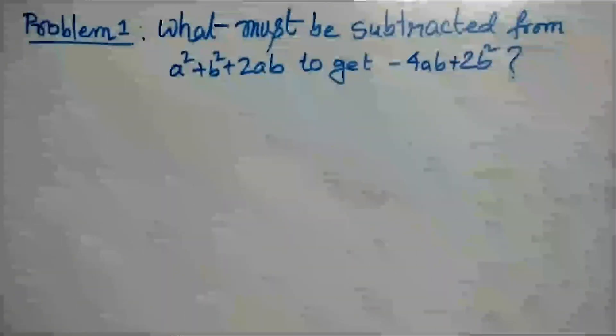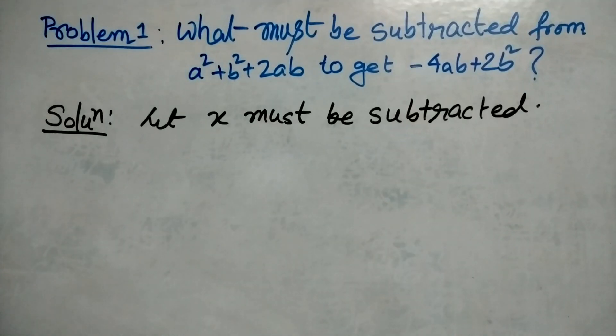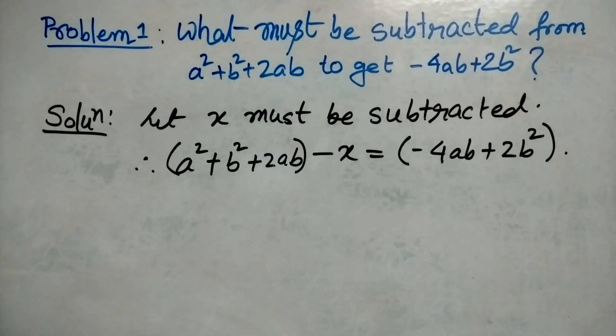Problem number one: What must be subtracted from a²+b²+2ab to get -4ab+2b²? Let x must be subtracted, therefore a²+b²+2ab - x = -4ab+2b².